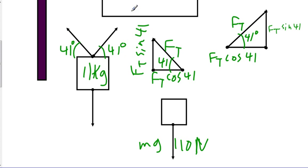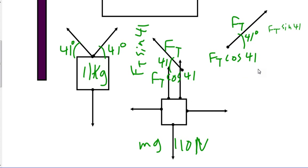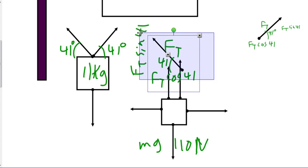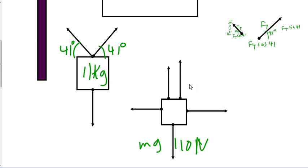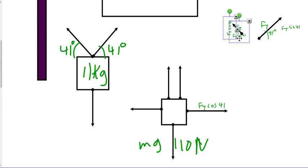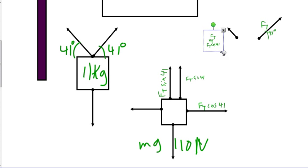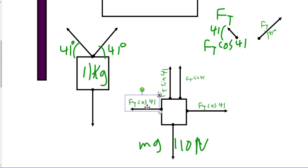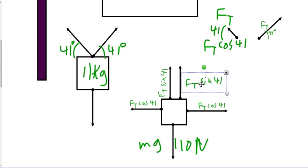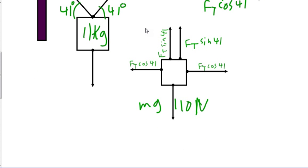What is important to pay attention to here is that the x components are going in different directions — one is going to the left, one going to the right — but their y components are both going straight up. Once we resolve our non-perpendicular vectors into x and y components, we put the y components where they need to be and the x components where they need to be. Now you can see what our free-body diagram becomes. We have FT cosine 41 going to the left, FT cosine 41 going to the right, FT sine 41 going up, FT sine 41 going up as well, and 110 newtons going down.